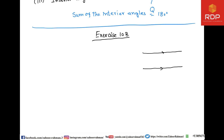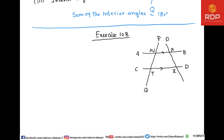In question number 1, two parallel lines are shown with arrowheads, and there are two transversal lines. The parallel lines are labeled AB and CD, the intersection points are labeled W, X, Y, Z, and the transversals are PQ and RS.